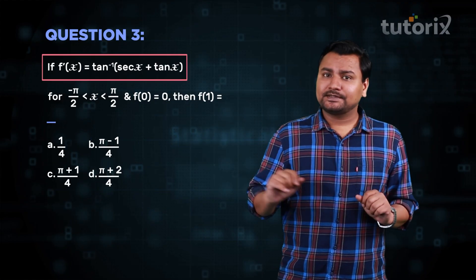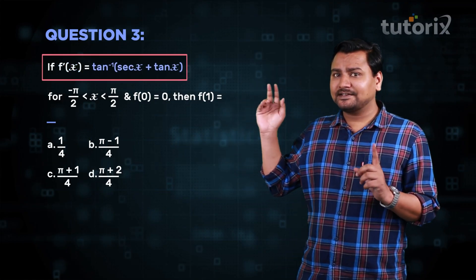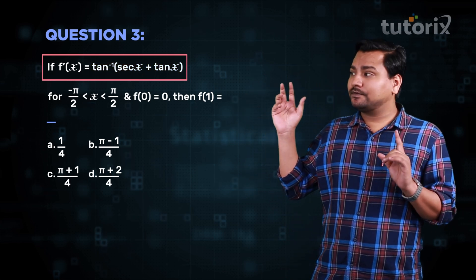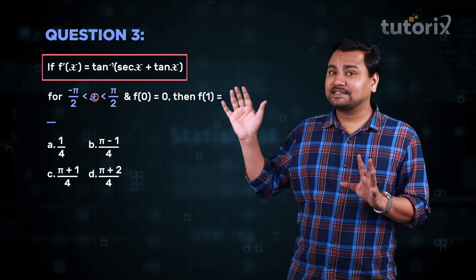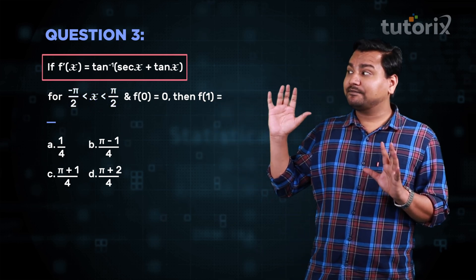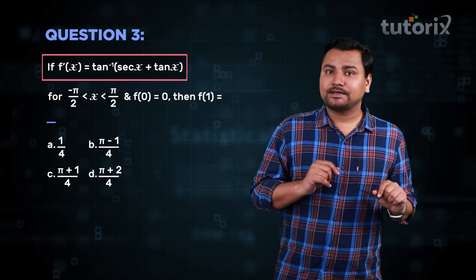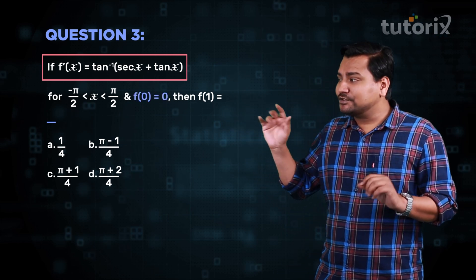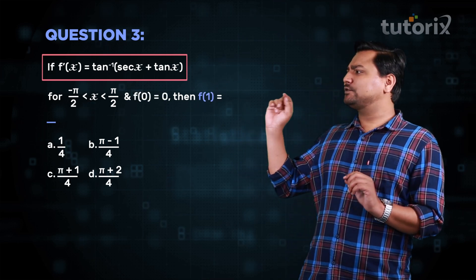Read this question. The derivative value of f is given, that is tan inverse of secant x plus tan x. Observe that there is one interval of x given, that is x is in between minus pi by 2 to pi by 2, and we have to use this while solving the question. The value of the function at x equal to 0 is given as 0, and we have to calculate the value of the function at x equal to 1.